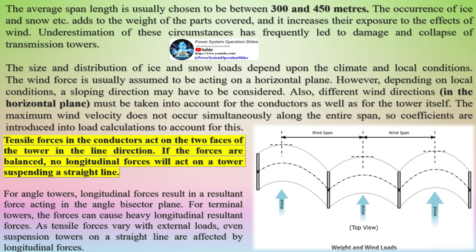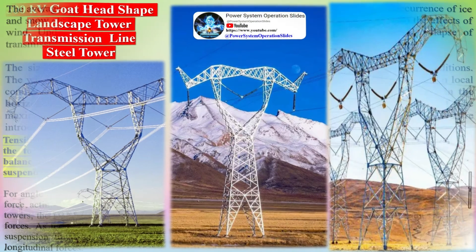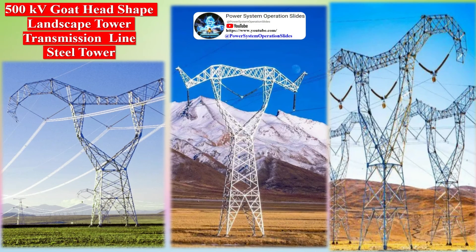The average span length is usually chosen to be between 300 and 450 meters. The occurrence of ice and snow adds to the weight of covered parts and increases their exposure to wind effects. Underestimation of these circumstances has frequently led to damage and collapse of transmission towers.